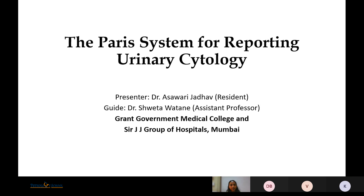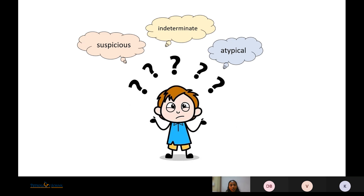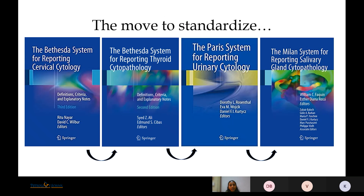The topic for today's presentation is the Paris System for Reporting Urinary Cytology. The use of certain terms like suspicious, indeterminate, and atypical create confusion amongst urologists as well as patients who have access to their reports these days, so it is imperative for us to have a standardized terminology.